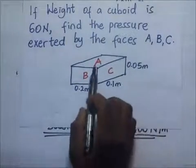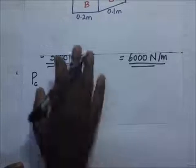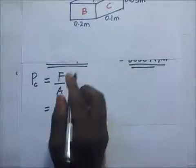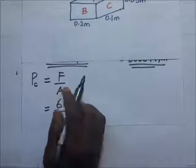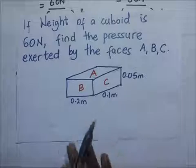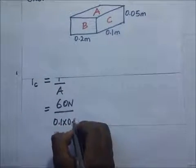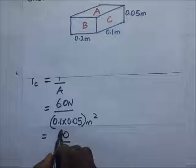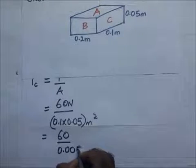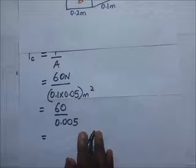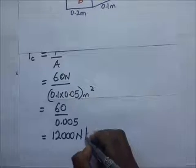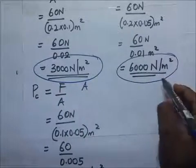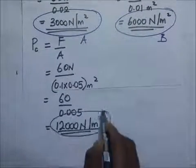Then we have face C. The pressure of face C is equal to force over area. The force is still 60 newtons. Divide that by the surface area — the dimensions of C are 0.1 times 0.05, giving 0.005 meters squared. So 60 divided by 0.005 gives us 12,000 newtons per meter squared. This is the pressure of face A, this is the pressure of face B, and this is the pressure experienced on face C.